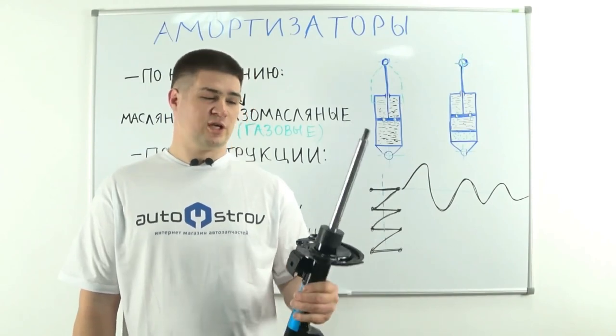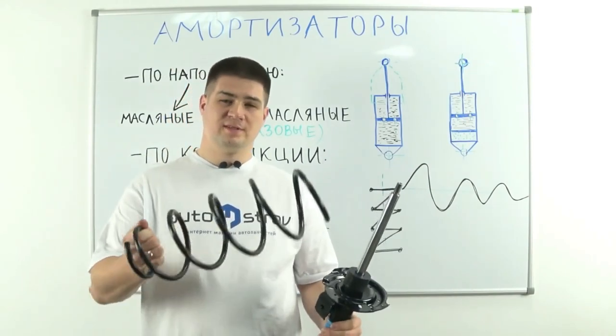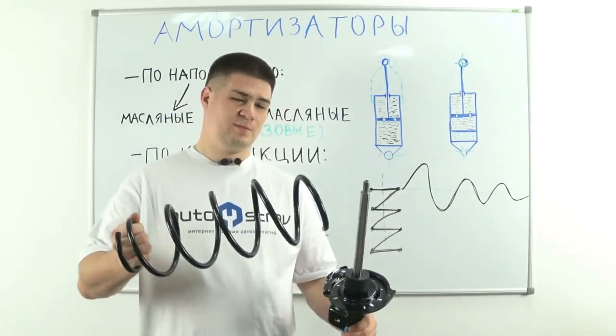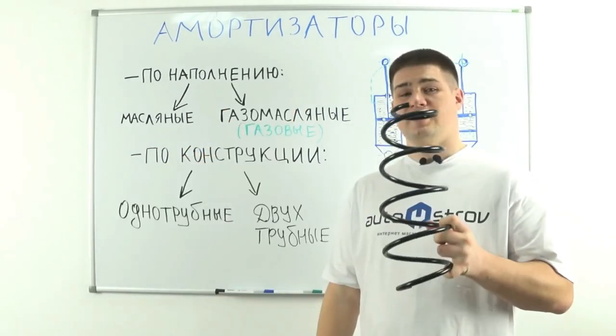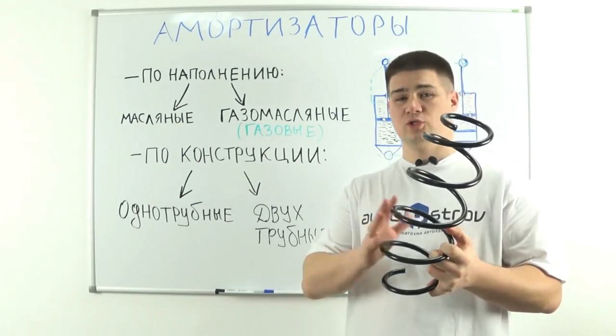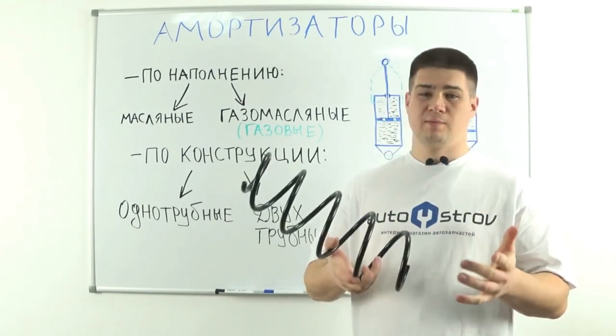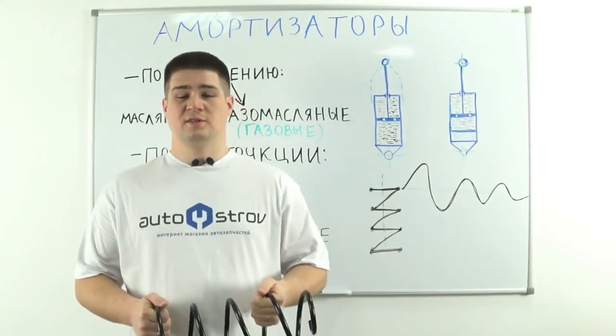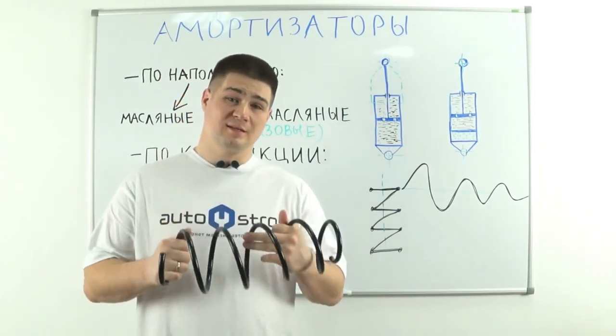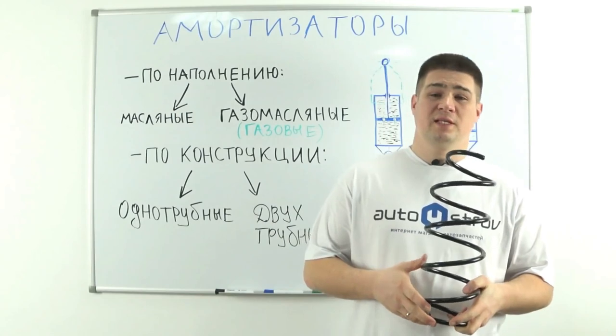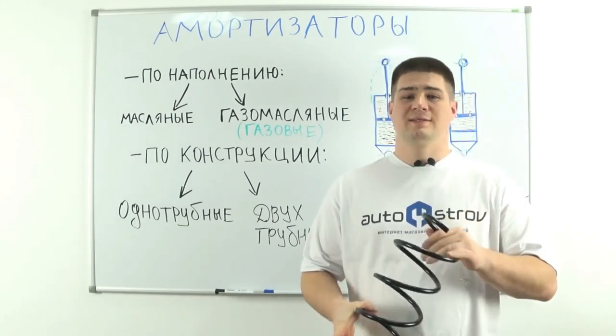As you all know, the shock absorber is a part of the suspension and works in conjunction with the coil springs. This is roughly how they are installed on the front suspension. Historically, springs were developed first, and only later the shock absorber itself. It turns out that on modern cars, coil springs cannot work without shock absorbers. What's the problem? The problem is that the spring is the source of vibration.